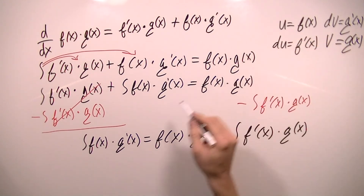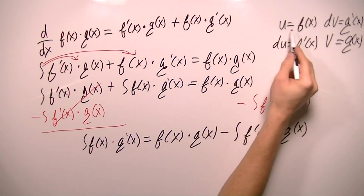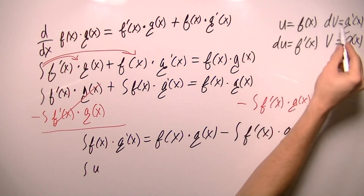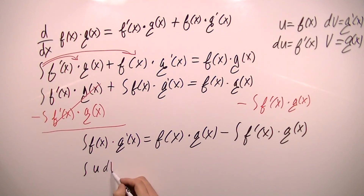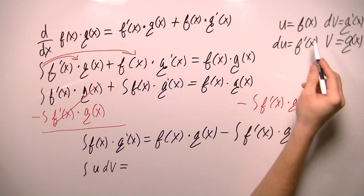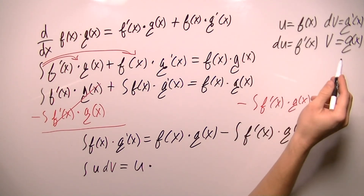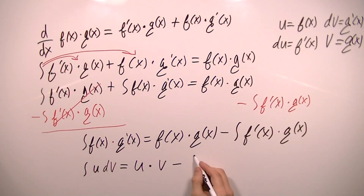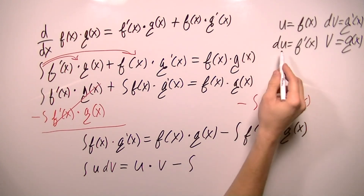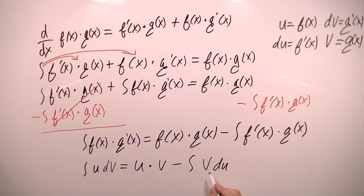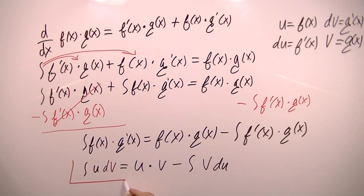So I'm going to substitute into this formula. u is f(x), so I get the integral of u·dv — where g′(x)·dx is dv — equals f(x), which is u, times g(x), which is v, minus the integral of f′(x), which is du, times g(x), which is v. Switching the order, we now have the formula for integration by parts.